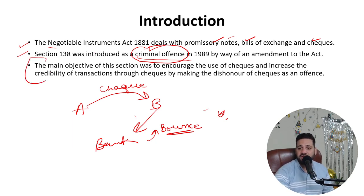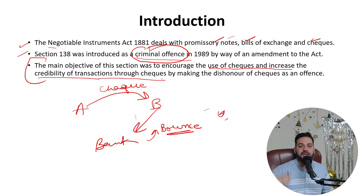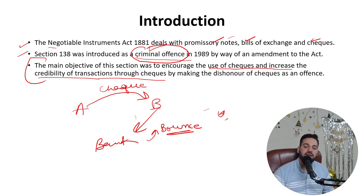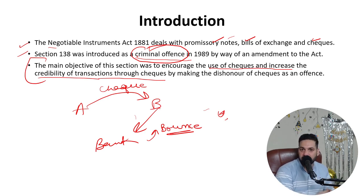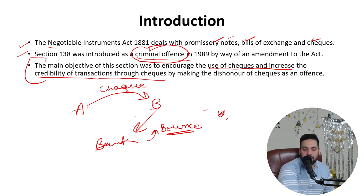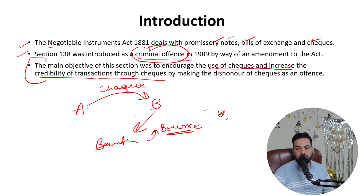The main objective of Section 138 was to encourage the use of checks and increase the credibility of transactions through checks. Back in the 1990s, checks were very popular. The government wanted people to make more use of banking channels so that tax could be collected and the economy made more formal. Nowadays the government wants people to use digital methods and make less use of cash, because more cash use leads to black money in the economy.